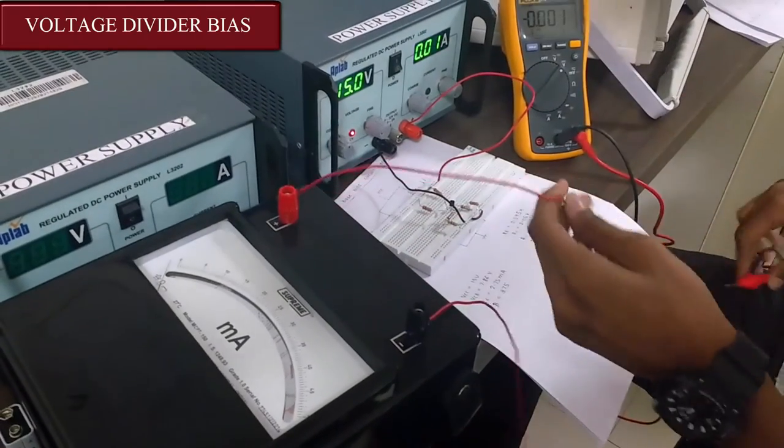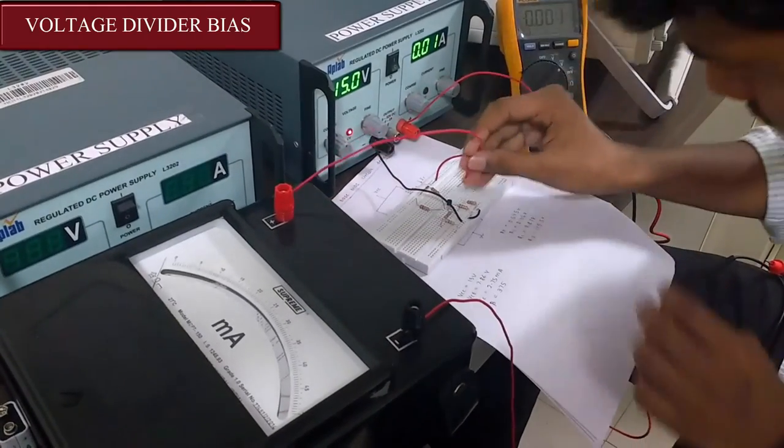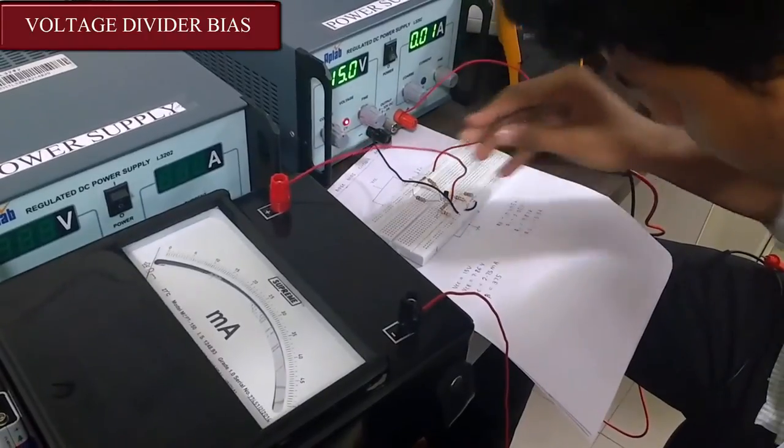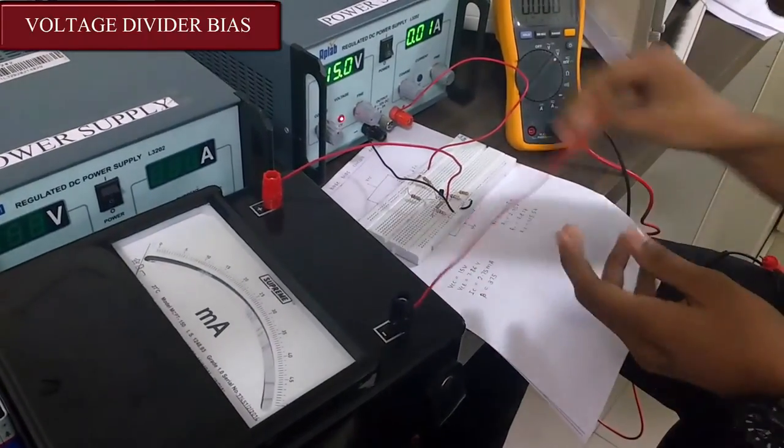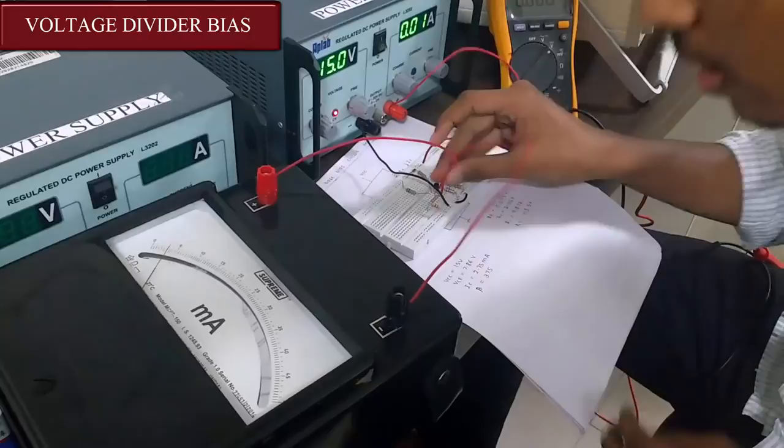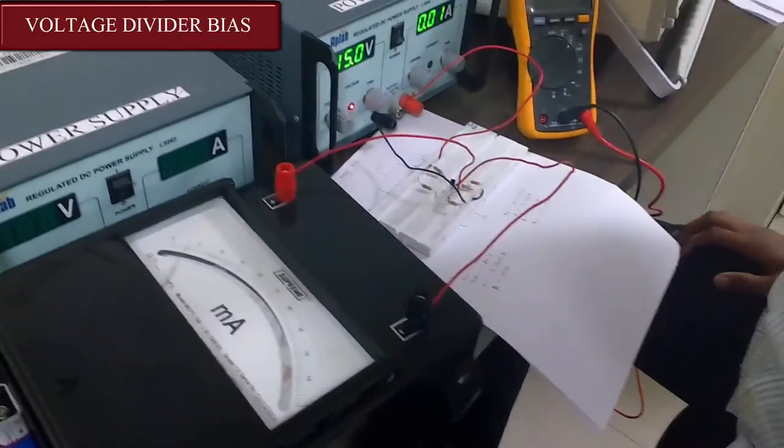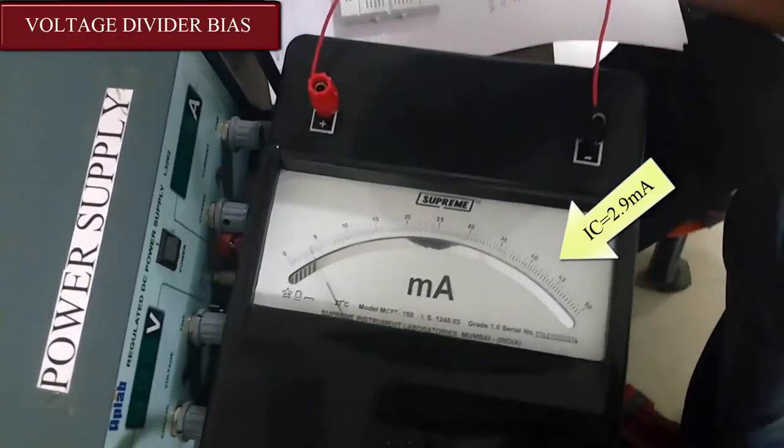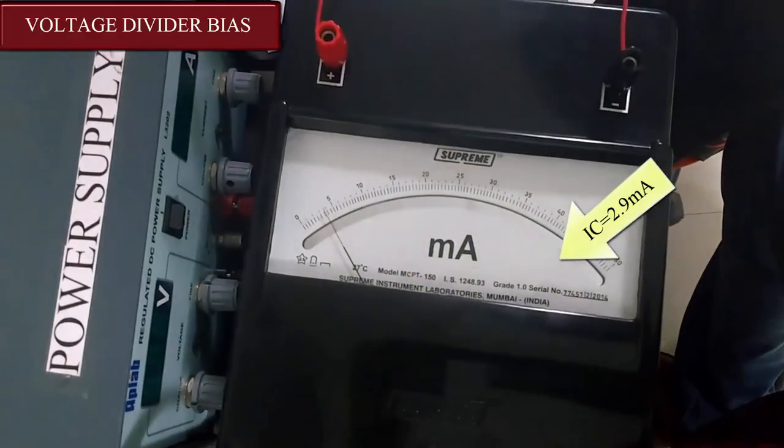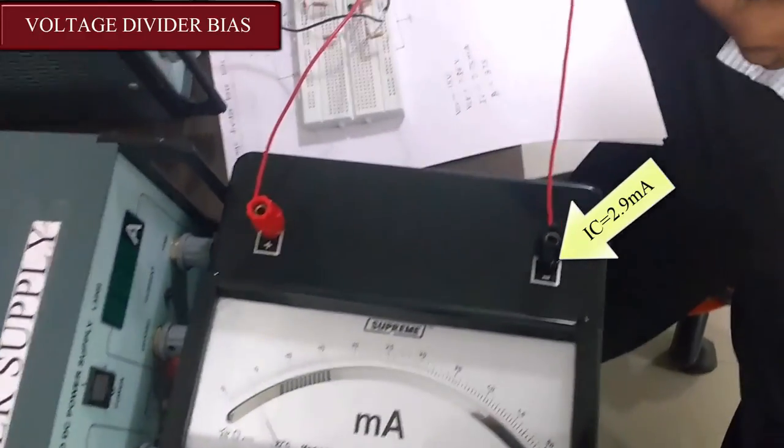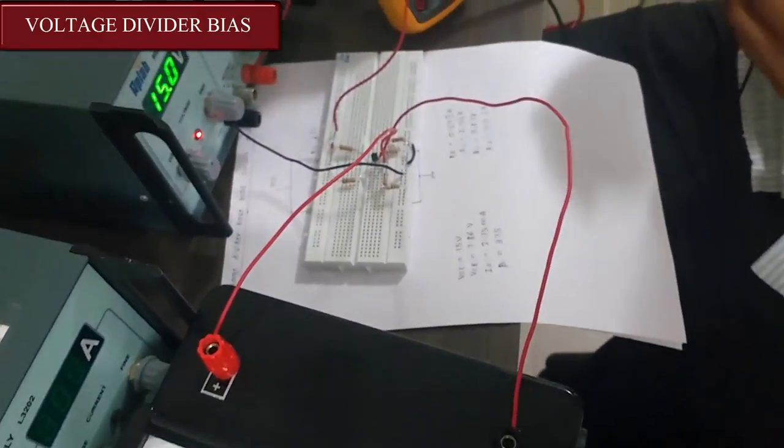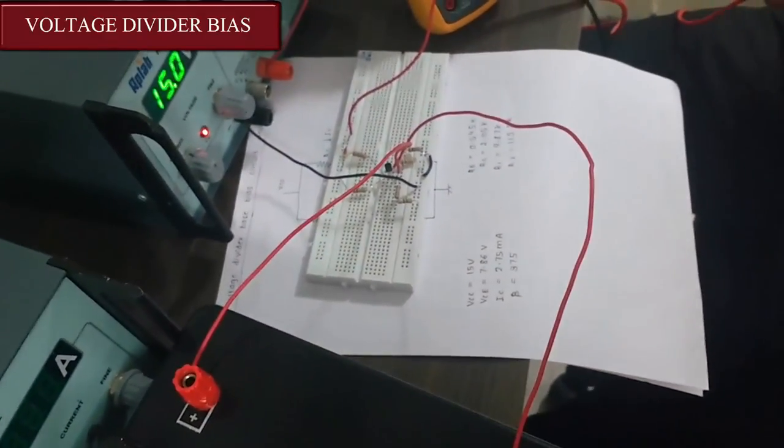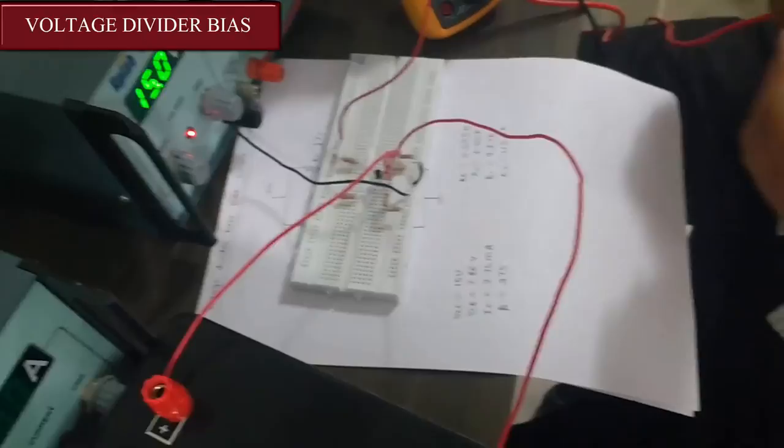For IC we will connect the positive of milliammeter to the collector and the negative to emitter. Here we can see that IC is close to 3 milliamps and our given value was 2.75 milliamps. So we can say that our voltage divider bias is correct within the given terms. Thank you.